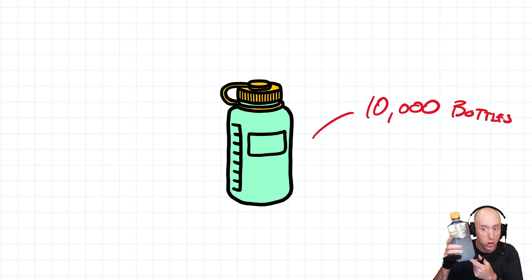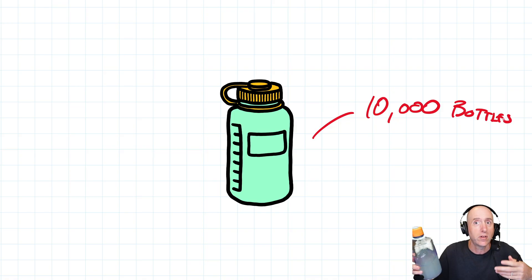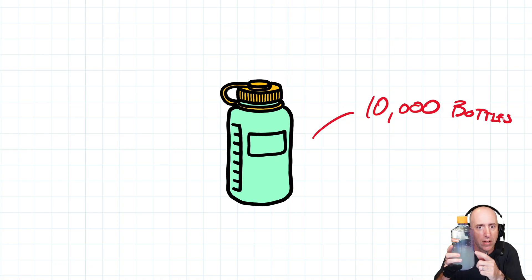If this was job order costing, they'd look at every bottle and say how much material, how much labor, how much overhead went into that bottle. That's what job order costing requires of us because every client's a little different and the costs are going to be a little different for every client.